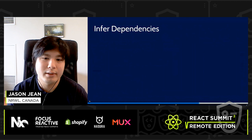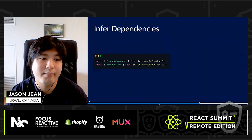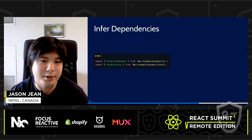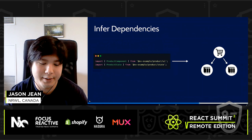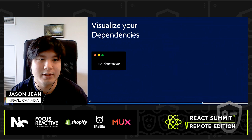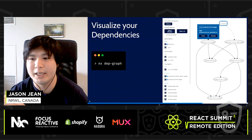NX is also smart enough to infer your dependencies. If you import `product-ui` and `product-state` from your application, NX infers that this application depends on those two libraries without you having to explicitly declare it. Once we know these dependencies, we can visualize them. Running `nx dep-graph` opens an interactive view of all dependencies within your project — you can see, for example, that products homepage depends on product UI.